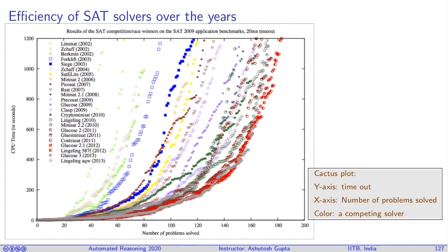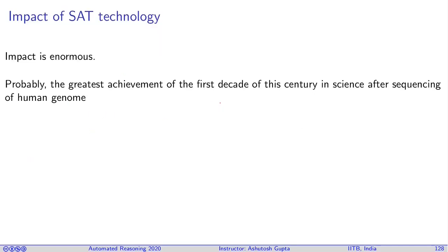This is called Cactus Plot. What it says is, suppose for solving each problem, I give you a hundred seconds. How many problems are you going to solve? You can see that over the years, this graph is shifting in this direction. As years pass by, the solvers have become faster and better. This has caused some kind of mini revolution.